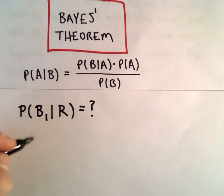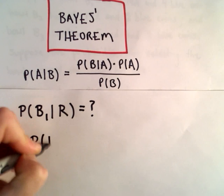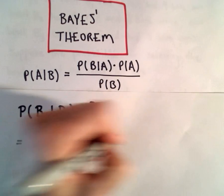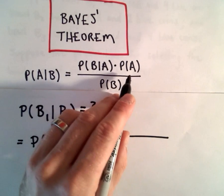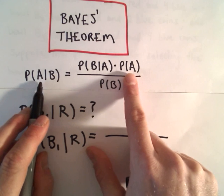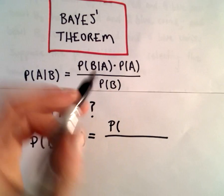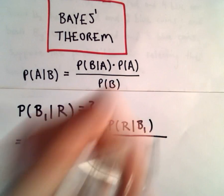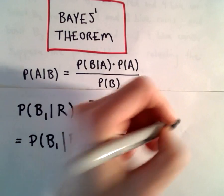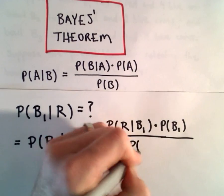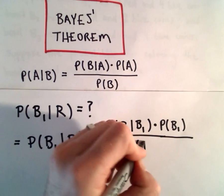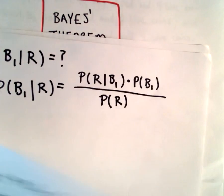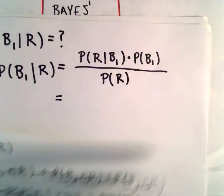Now I'm going to use our formula here. It says to calculate this, the probability that B₁ was selected, bowl one was selected, given that we picked a red coin, that's going to be the probability that a red coin was selected given that bowl one was selected, multiplied by the probability that bowl one was selected. And we divide that by the probability of getting a red coin, which we actually already figured out in part A. So we've actually already got all of these probabilities.